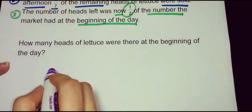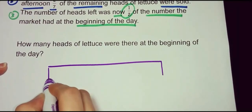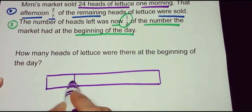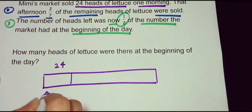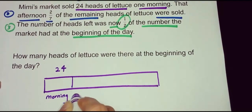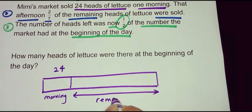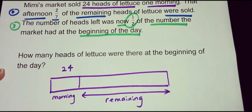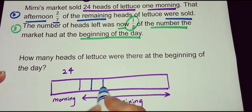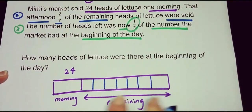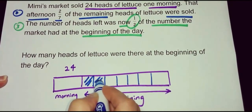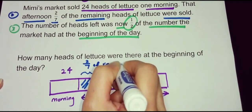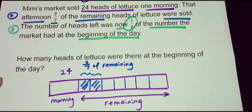So let's draw a bar model. This would be what the market had at the beginning of the day. In the morning, twenty-four were sold, and this is what is remaining. In the afternoon, two-sevenths of the remaining was sold.